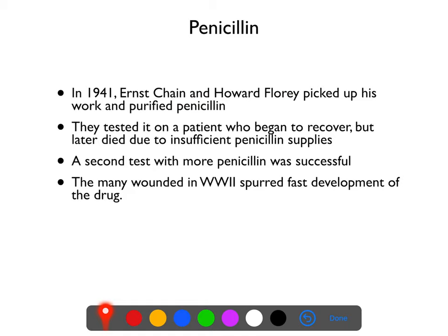But now they knew what they were doing. They had the right chemical — they just hadn't prepared enough of it. So they purified more, found another patient with a wound infection, and this time had enough penicillin to treat the full course of the disease. The patient recovered, and we entered the modern era of medicine. Many wounded in World War II were treated with penicillin — probably the most useful invention of World War II, at least for humanity.